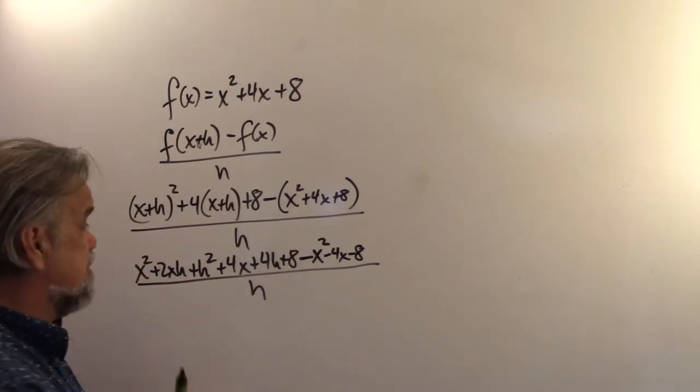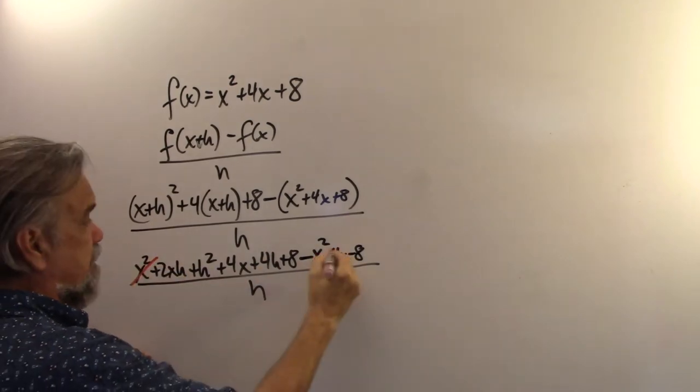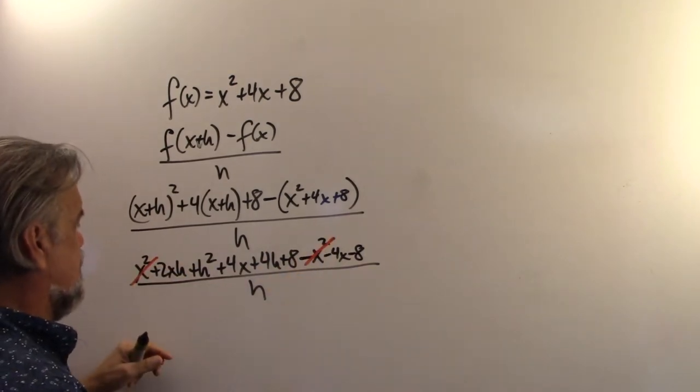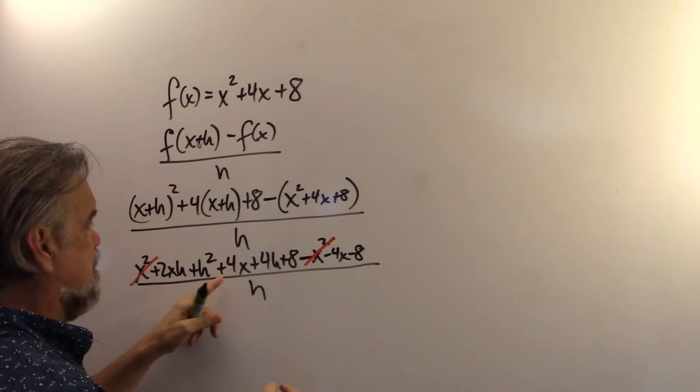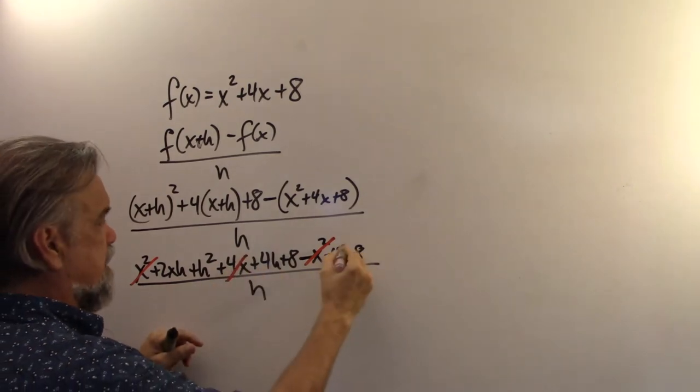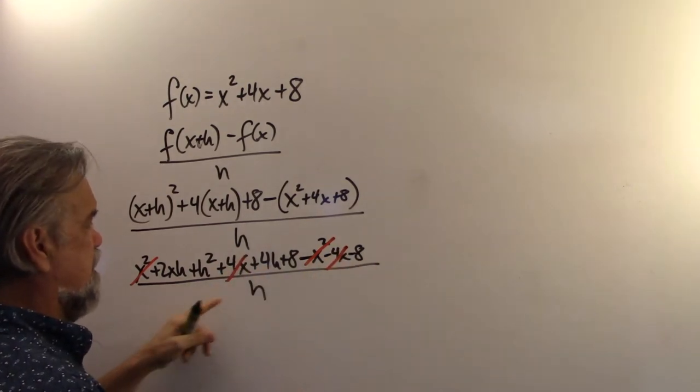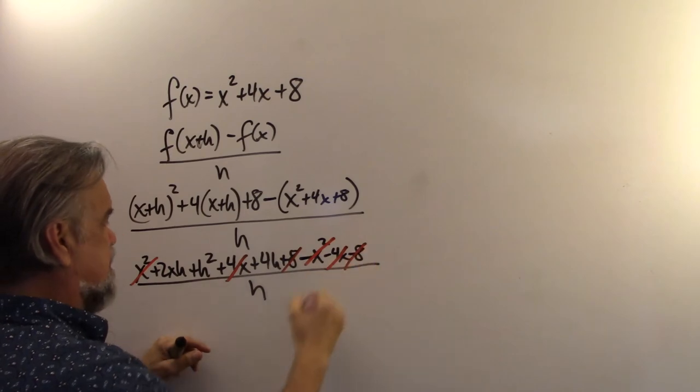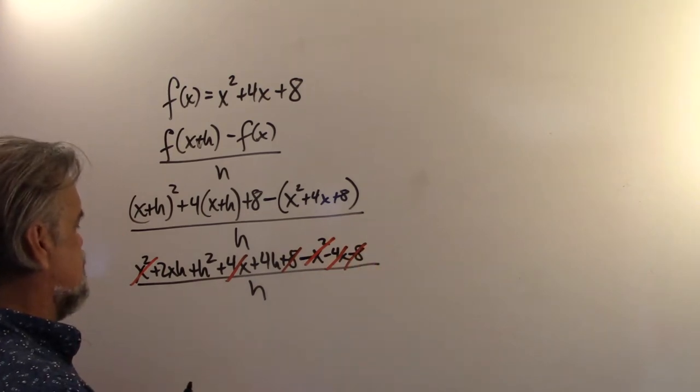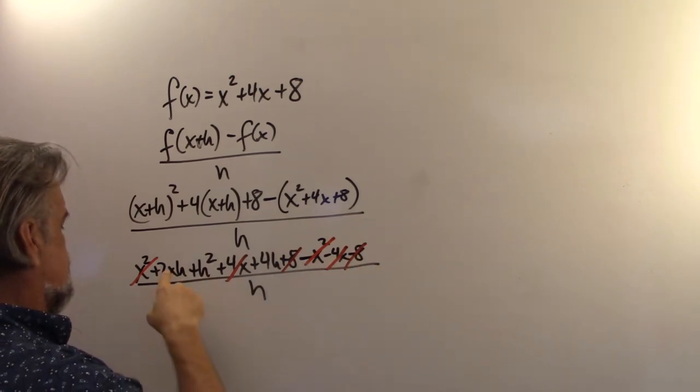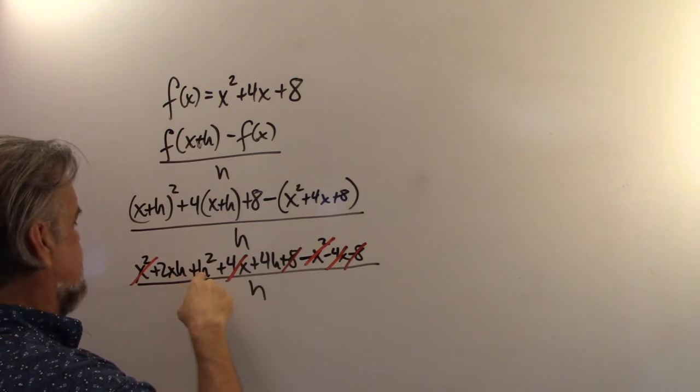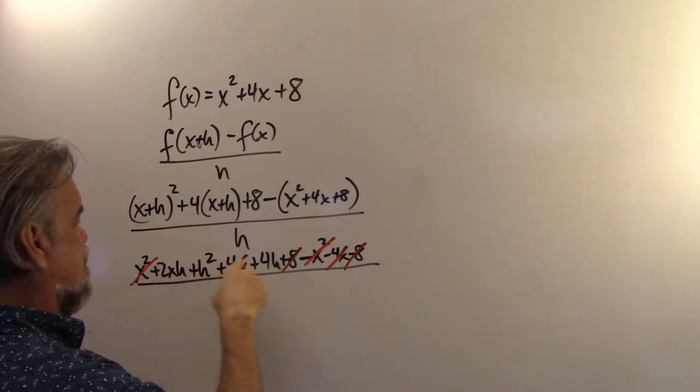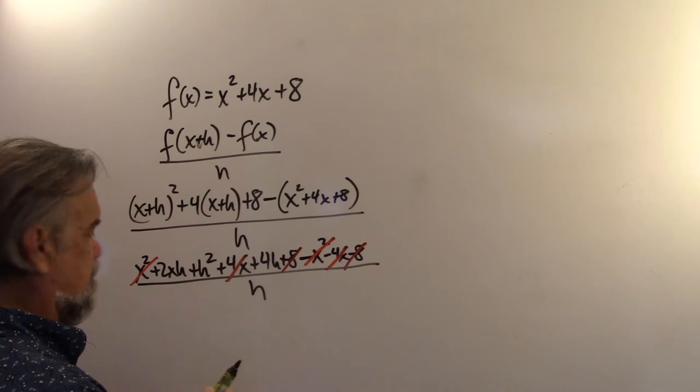Because now we look at this and we say, hey, x squared and x squared, those go away. And let's see, plus 4x minus 4x, those go away. And 8 minus 8, those go away.